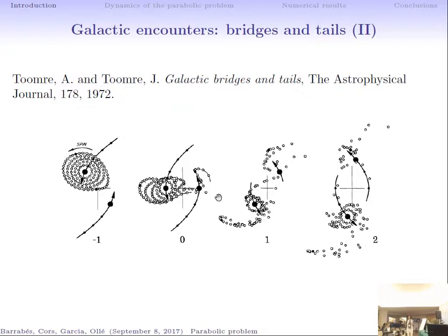They performed numerical simulations for direct and retrograde motions, following all these particles to observe that some particles jump to the other primary, some remain in between, and others are left behind one of the primaries. They observed that for different values of the mass parameter mu, and for direct and retrograde orbits, bridges and tails appear — mostly in the retrograde cases.